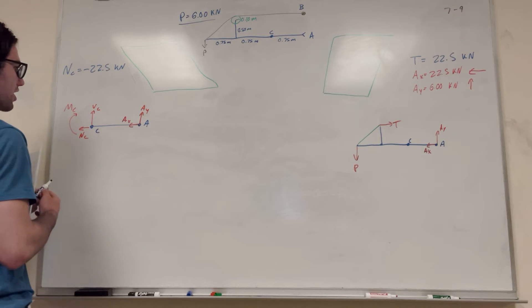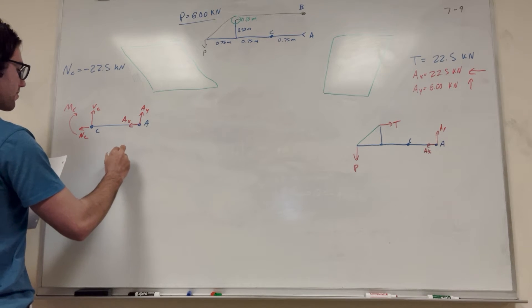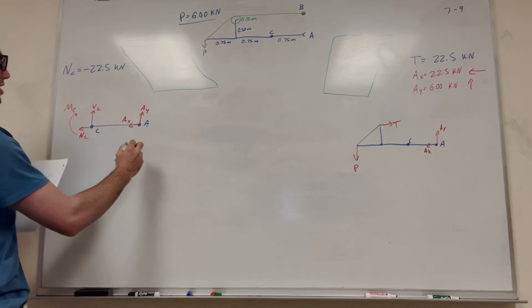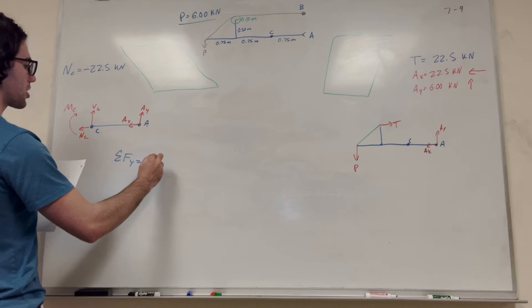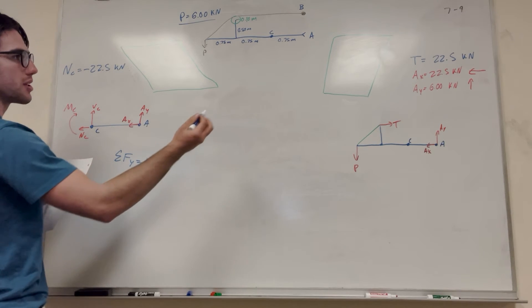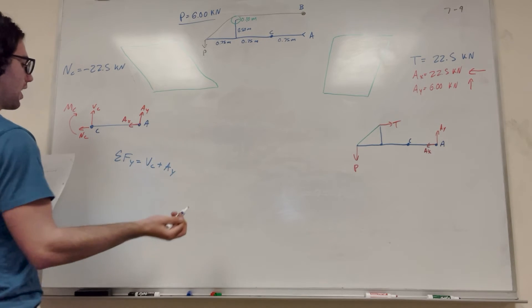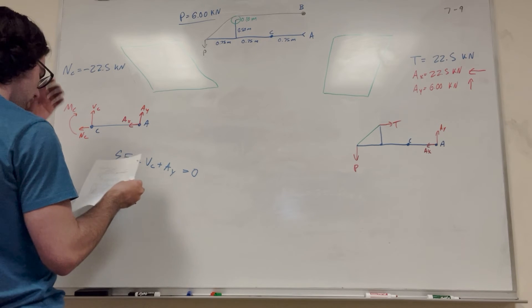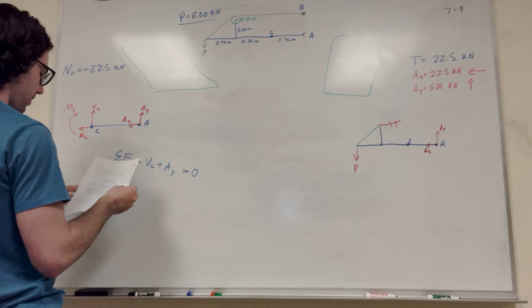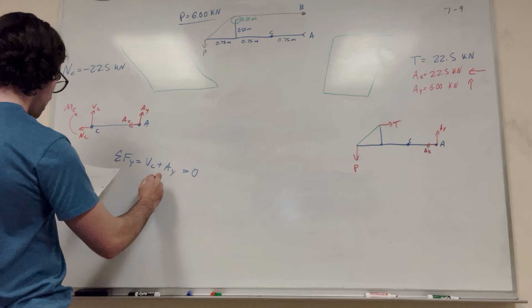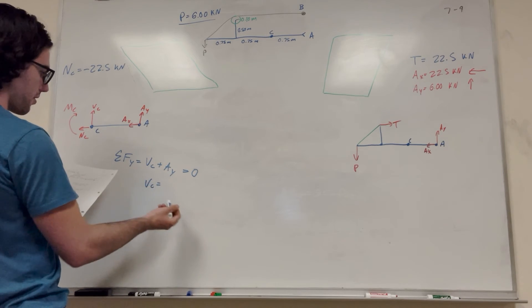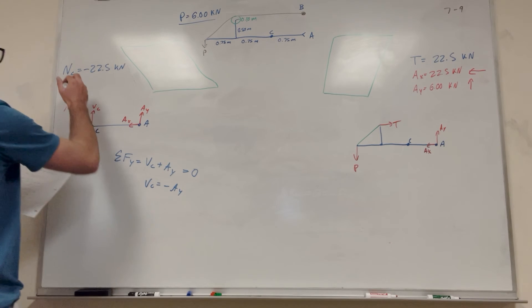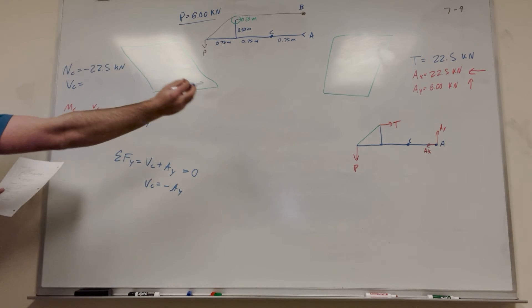Then let's do sum of the forces in the Y direction. So what do we got? We got V_c. So this is our shear force. Pushing up. A_y. We said it's pushing up. And that's it. And that's equal to 0. So then we can say V_c is equal to negative A_y. So then V_c is equal to negative 6.